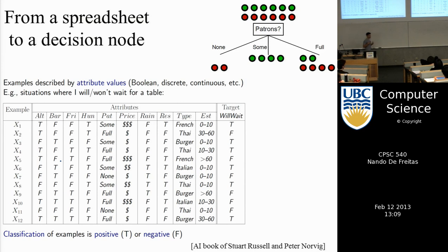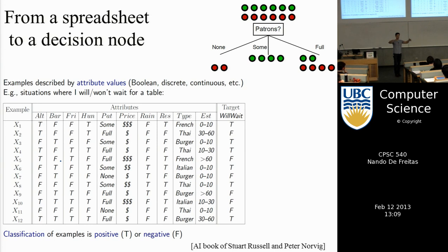Now let's move to how we learn a tree. We build trees in a recursive and greedy fashion — first learning the root node, then proceeding to the next layer. Some implementations go breadth-first, others depth-first up to a certain depth. Assuming breadth-first: you build the first level, then the second level, and so on.